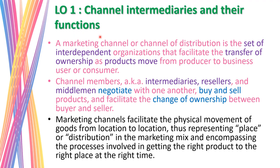Learning objective number one: channel intermediaries and their functions. Place is about talking about the placement of the product. In order for a consumer to get a product from the manufacturer, they require intermediaries. We have a marketing channel, also called marketing intermediaries or channel of distribution, which is the set of interdependent organizations that facilitate the transfer of ownership as the product moves from producer to business user or consumers.